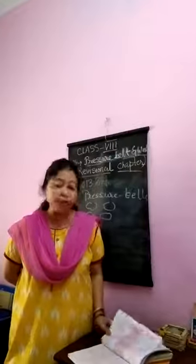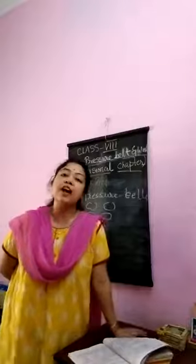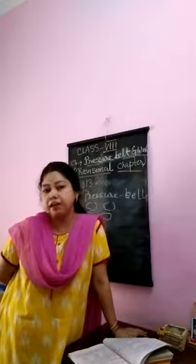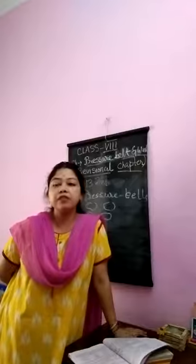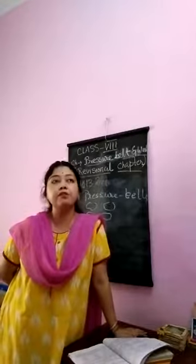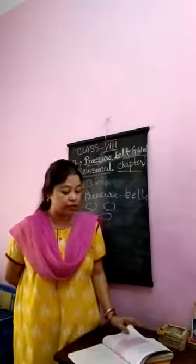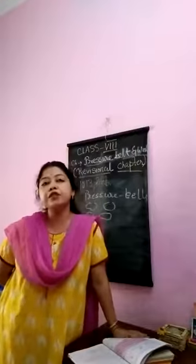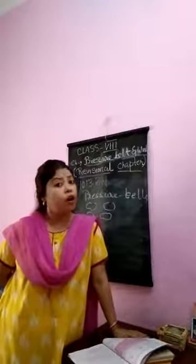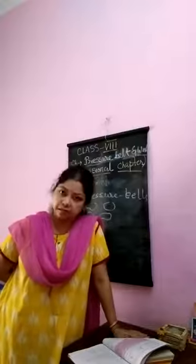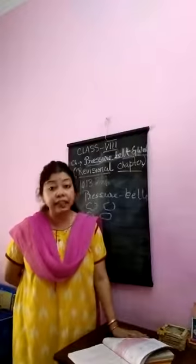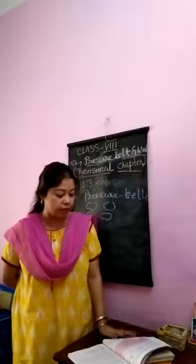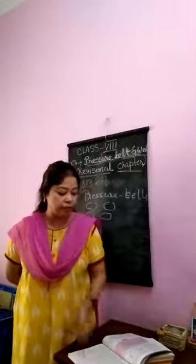Sudden winds come without any prior notice and we cannot predict when they will arrive. There are two types: cyclone and anticyclone. Cyclones have a low pressure center with winds coming from outside towards the center; they are anti-clockwise in the northern hemisphere and clockwise in the southern hemisphere. Anticyclones have high pressure at the center and low pressure outside; winds blow clockwise in the northern hemisphere and anti-clockwise in the southern hemisphere. The word cyclone was named by Henry Piddington and anticyclone by Francis Galton.